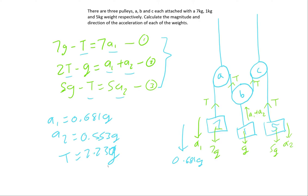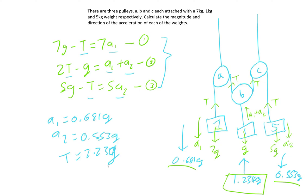Pulley B's acceleration is a combination of A1 and A2, and since it is still positive it is actually moving upwards. So the 1kg pulley will be moving upwards at A1 plus A2, which is 1.234g. Subsequently, the third pulley is moving downwards at 0.553g. As we can see, the first and third pulley are moving down at their respective speeds, which is counteracted by the middle pulley moving up at this speed to ensure that the length of the string remains constant. That is what I meant at the start when I said B must be moving at A1 plus A2.